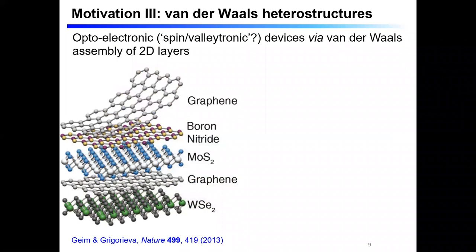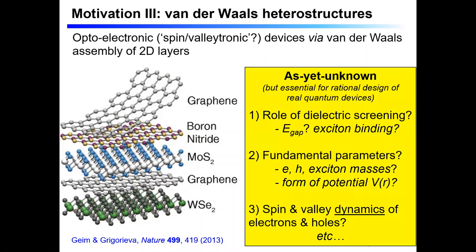The third motivation is the use of these 2D materials to assemble van der Waals heterostructures. A grad student with steady hands can assemble their own optoelectronic or spin- or valleytronics device just by van der Waals stacking and assembly of exfoliated monolayers. There are hundreds if not thousands of devices of this type demonstrated to date, probably being made as we speak in this very building.